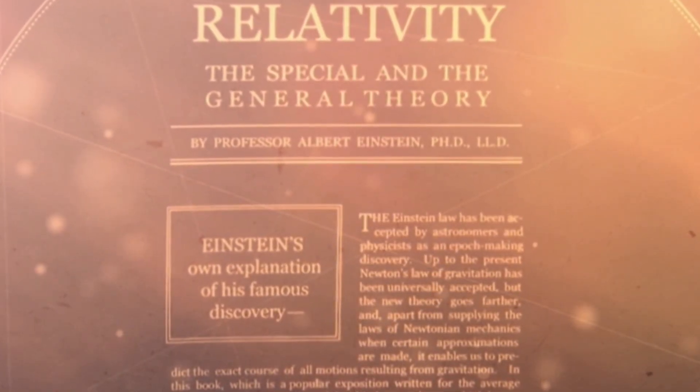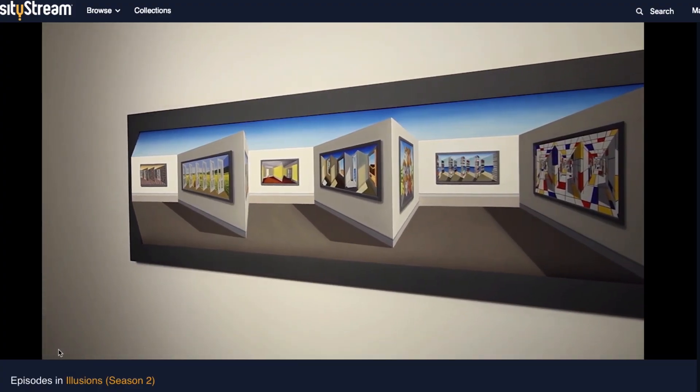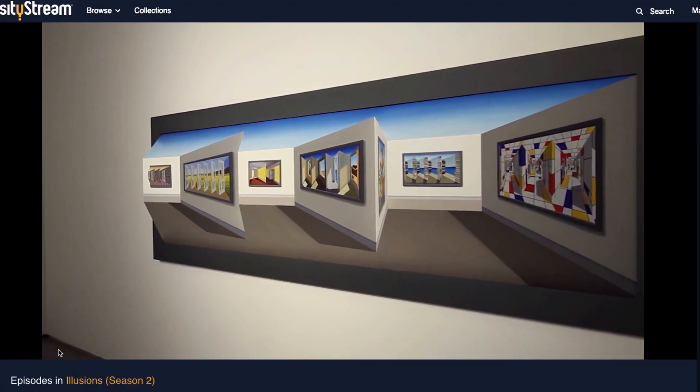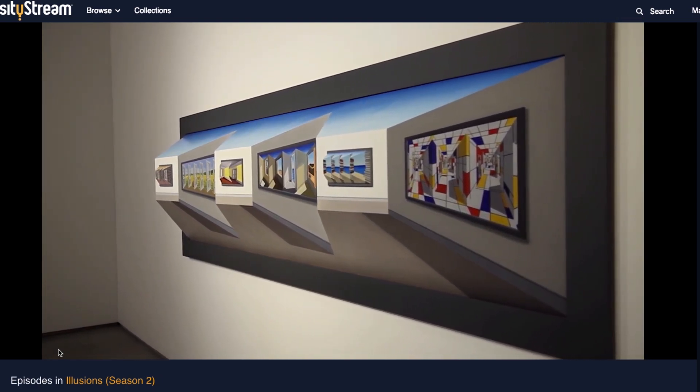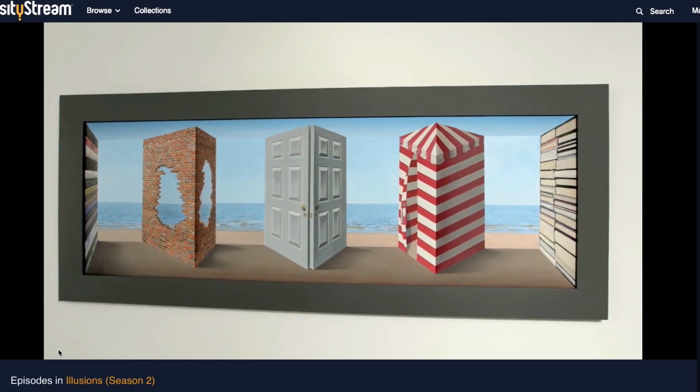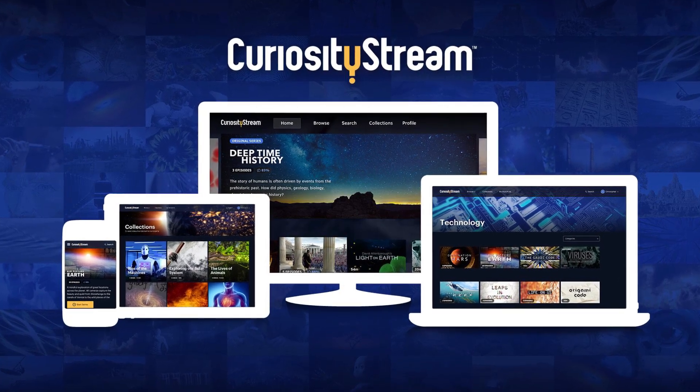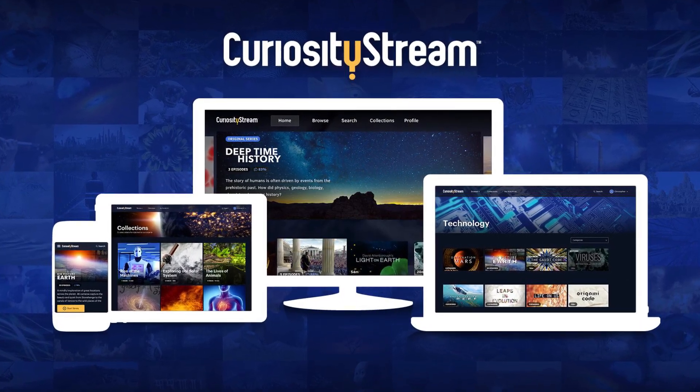Founded by John Hendricks, aka the founder of the Discovery Channel, CuriosityStream is an extremely affordable streaming service, and only $2.99 a month, that will satisfy anyone with a strong desire to learn, explore, and understand the world around us. The service is available on a variety of platforms worldwide, including Android, Roku, Xbox One, Apple TV, and more.